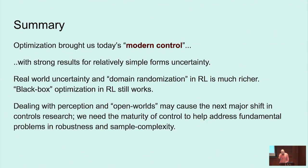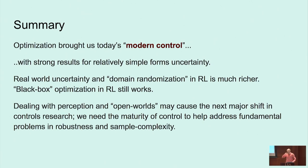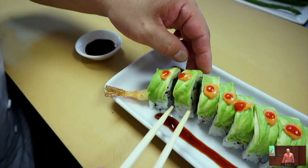For me, the future directions and new trends: optimization has sort of brought us to today's modern control with really strong results for relatively simple forms of uncertainty — all these state-space methods, so many good things there. But there are some simple tasks in manipulation that just break the stack. The real-world uncertainty and domain randomization in RL is much richer. Some of the problems we're trying now don't have a meaningful notion of state and don't make sense to think about sensors as making Gaussian errors. I think this problem of dealing with perception and the open-world manipulation problem may force the next shift in controls research, and it's going to look like something between controls and RL when it's done. There's so much we don't know how to do yet, but the next few years are going to be a lot of fun.